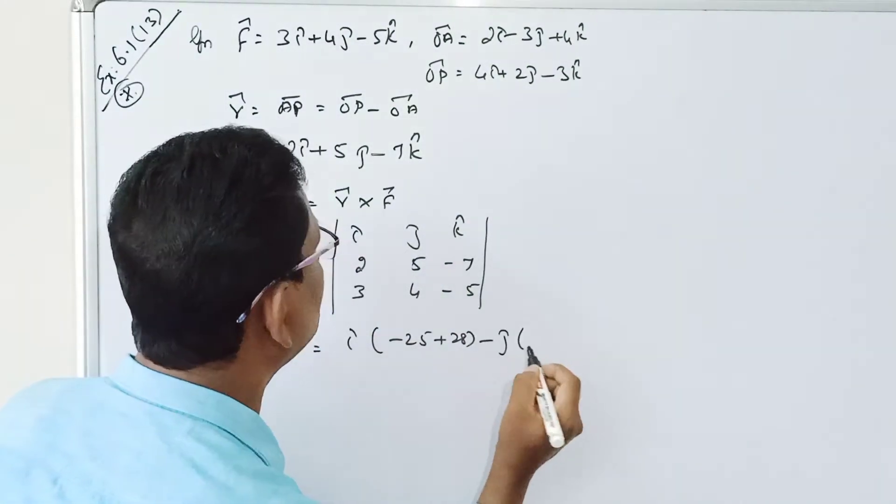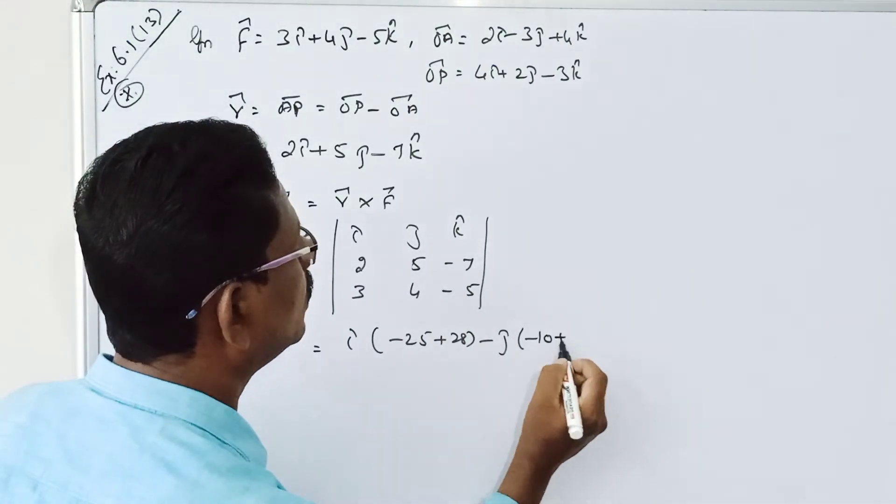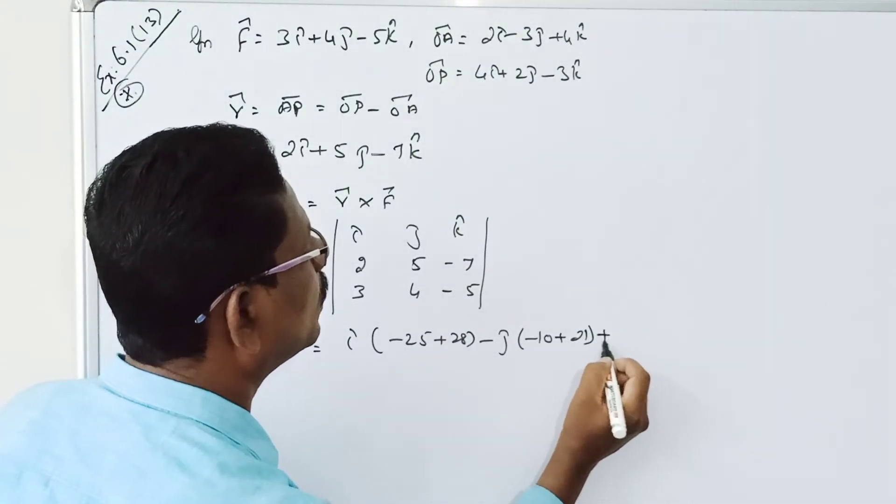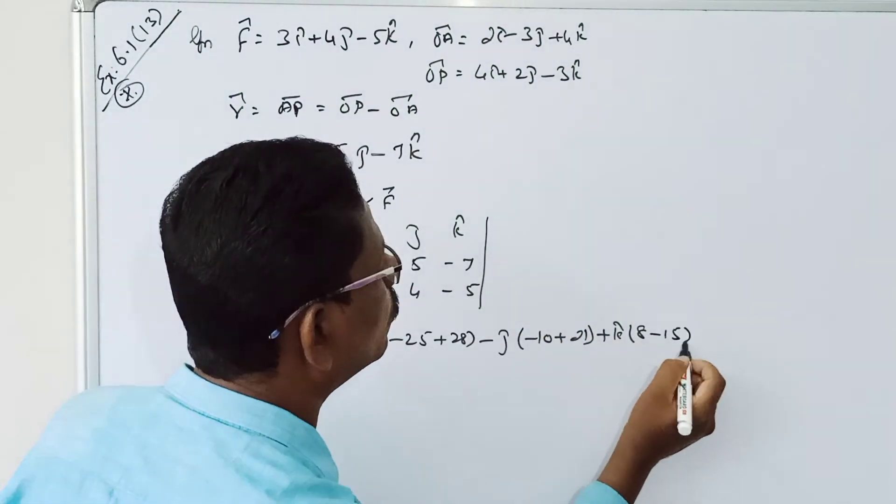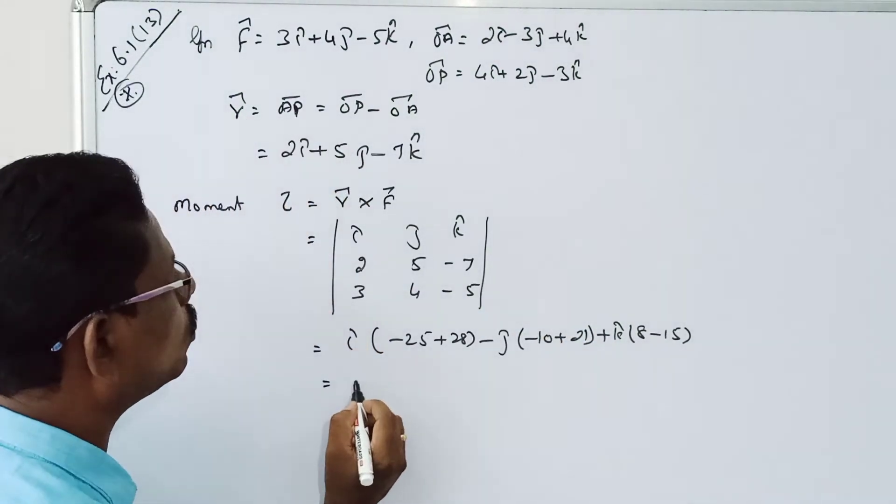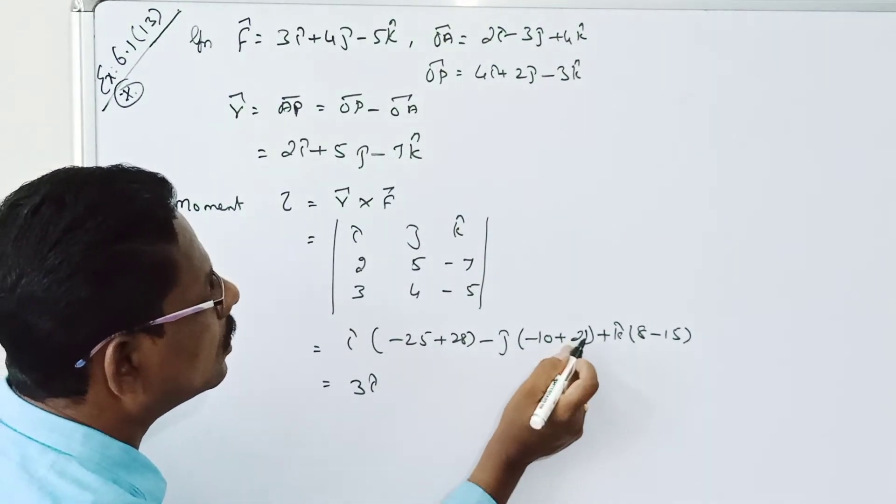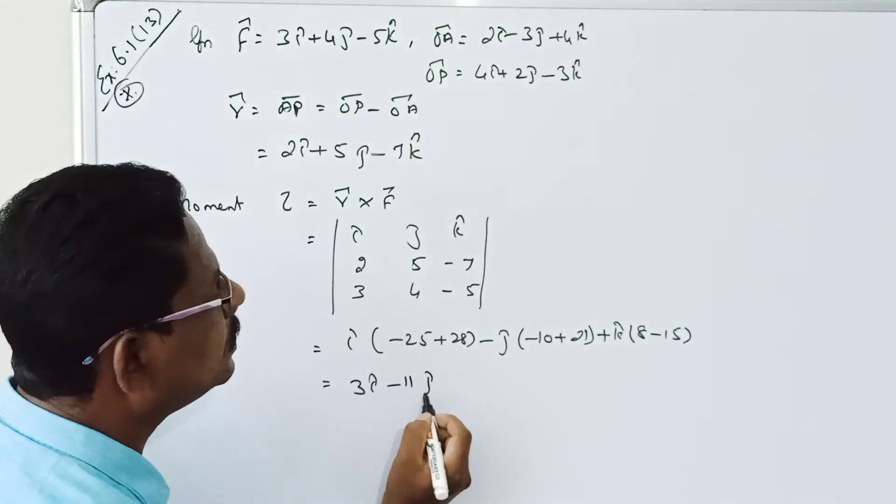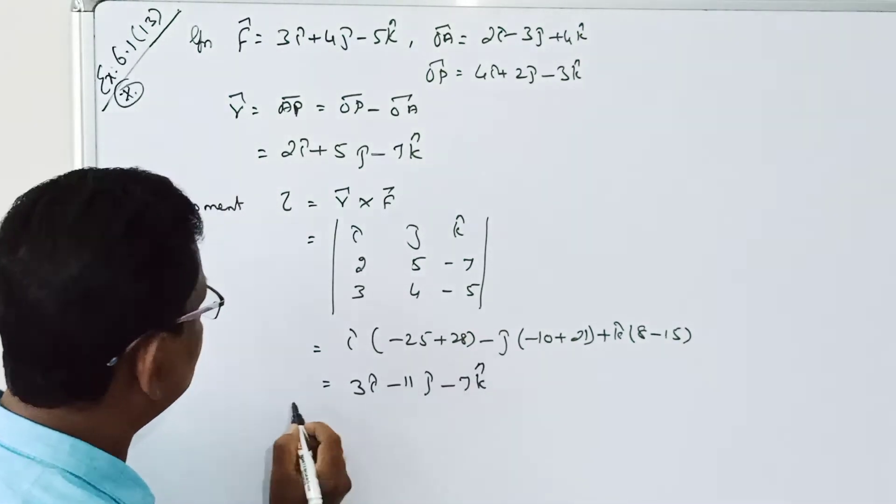Minus j into minus 10 plus 21, plus k into 8 minus 50. That is equal to 3i, here it is 11, minus 11j, here it is minus 7k. This is torque.